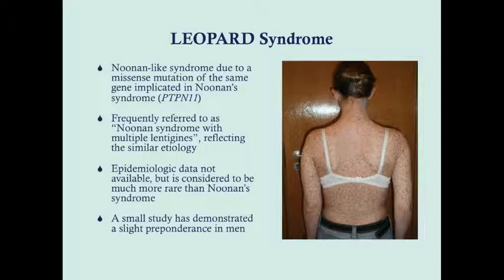It's a mutation of the PTPN11, and it's frequently referred to as Noonan Syndrome with multiple lentigines, or it could be referred to as multiple lentigines syndrome. Referring to it as Noonan Syndrome with multiple lentigines seems to be the preferred name, and it's accurate because it reflects a similar etiology and a similar symptomatic profile — similar features that you see in these patients compared to Noonan's patients.